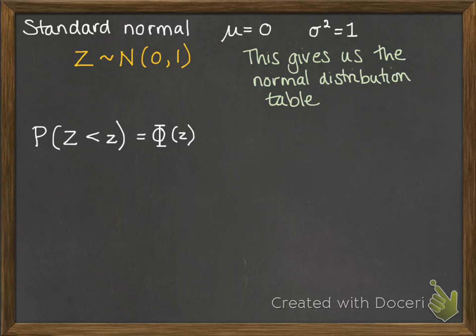And here's some notation. If we want the probability that z is less than a particular value of z, that we would call phi of that value, Φ(z). And that is the number that we find from the table.